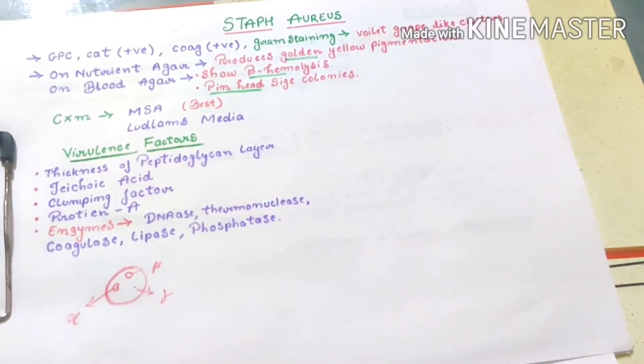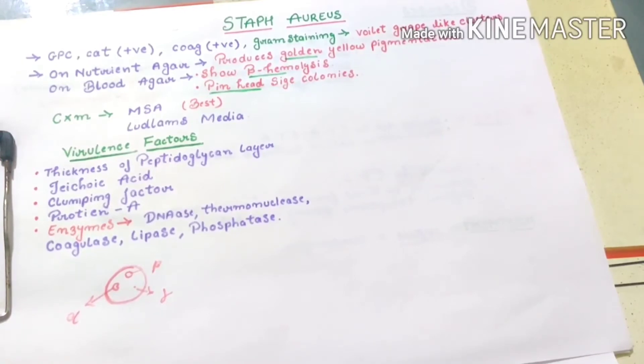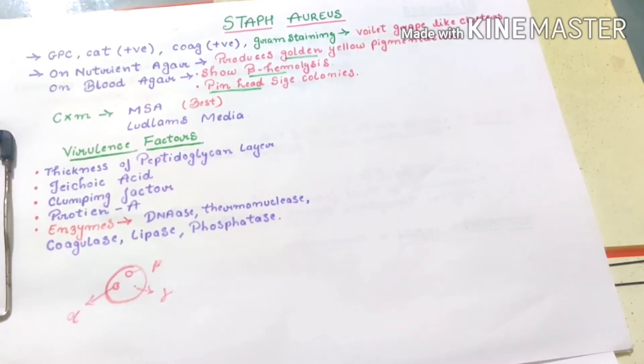Culture medium which is the best or most preferable is MSA, that means mannitol salt agar, and second best is Ludlam's media. These two cultures are considered best in case of Staph aureus, but MSA is preferable.